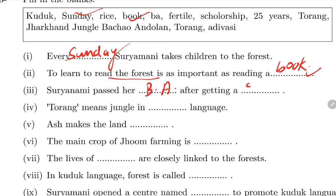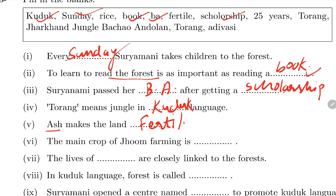Fill in the blanks: Suryamani passed her BA after getting a scholarship. Torang means jungle in Kuduk language. Ash makes the land fertile - ash gets mixed into the land and increases fertility. The main crop of Zoom farming is rice. The lives of Adivasis are closely related and linked to the forest.